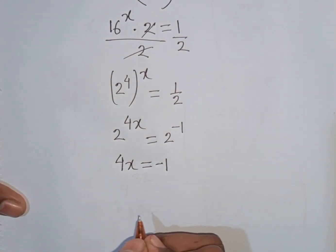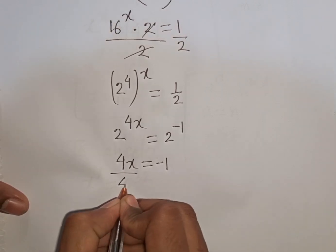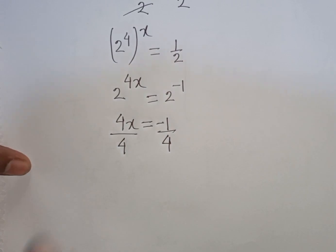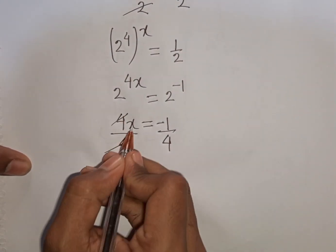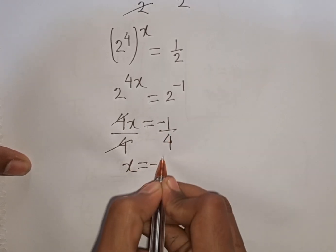Now we divide by 4 on both sides because we need the value of x. Divided by 4, divided by 4. The 4s cancel, so x equals -1/4.